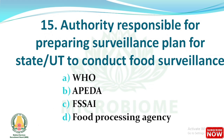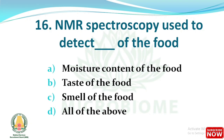Next question: the authority responsible for preparing the surveillance plan for states or union territories to conduct food surveillance is which of the following? The options are World Health Organization, APEDA, Food Safety and Standards Authority of India, and Food Processing Agency. The right answer is option C: FSSAI.